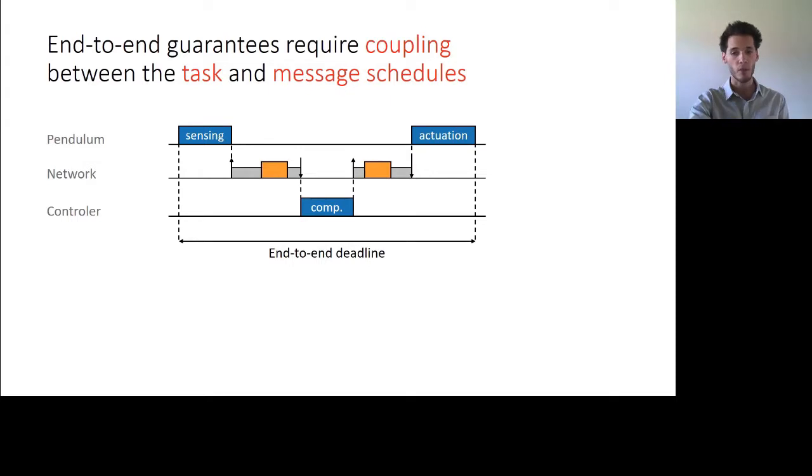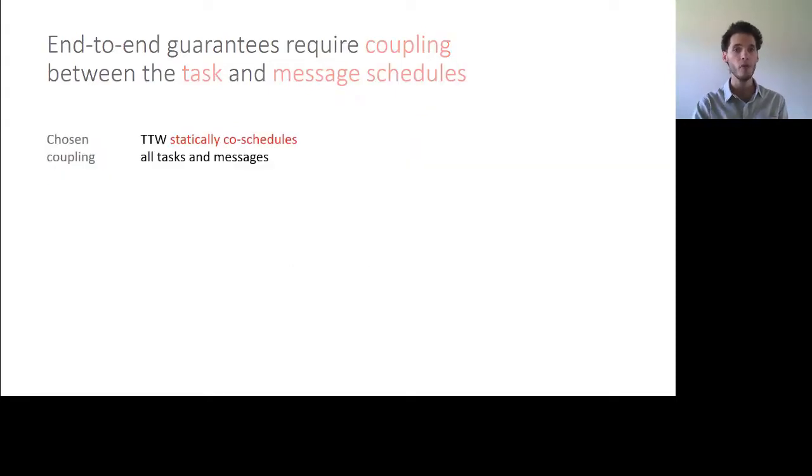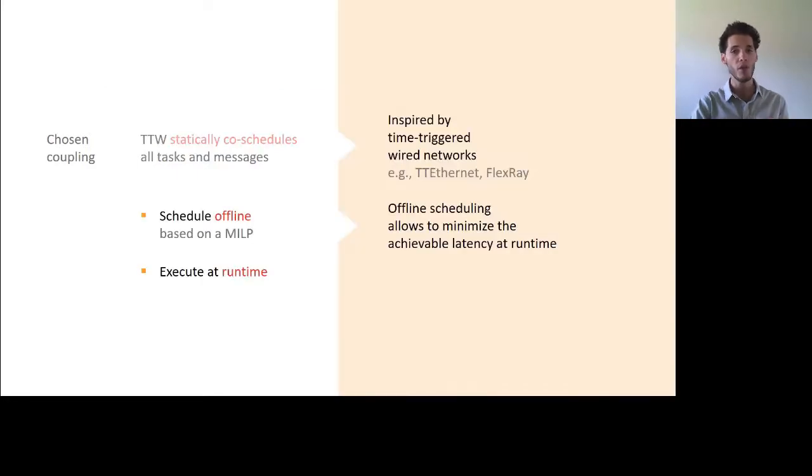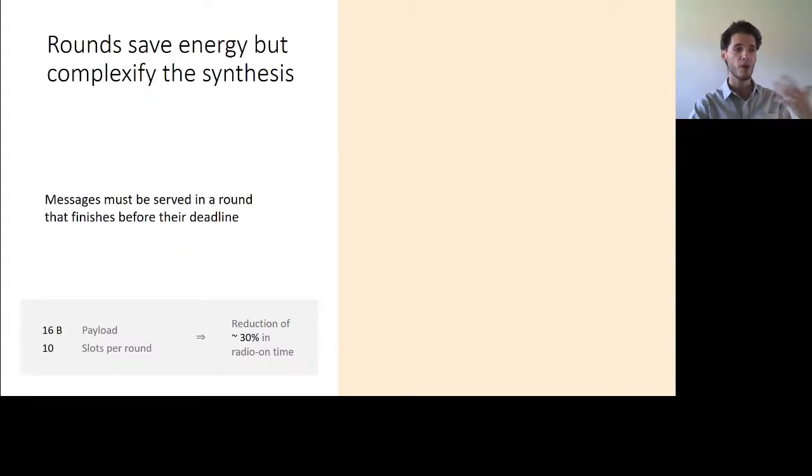This can be done in several ways and the choice we made in TTW design is to do a static co-scheduling, which is an approach well known and used a lot in the wired domain. So the approach is very similar here. We compute the schedules offline based on a mixed integer linear program that synthesizes scheduling tables that we can then execute at runtime. Now the one important difference between prior works in wired domain is that in the wireless design, we use this concept of rounds, which creates additional constraints that needs to be satisfied.